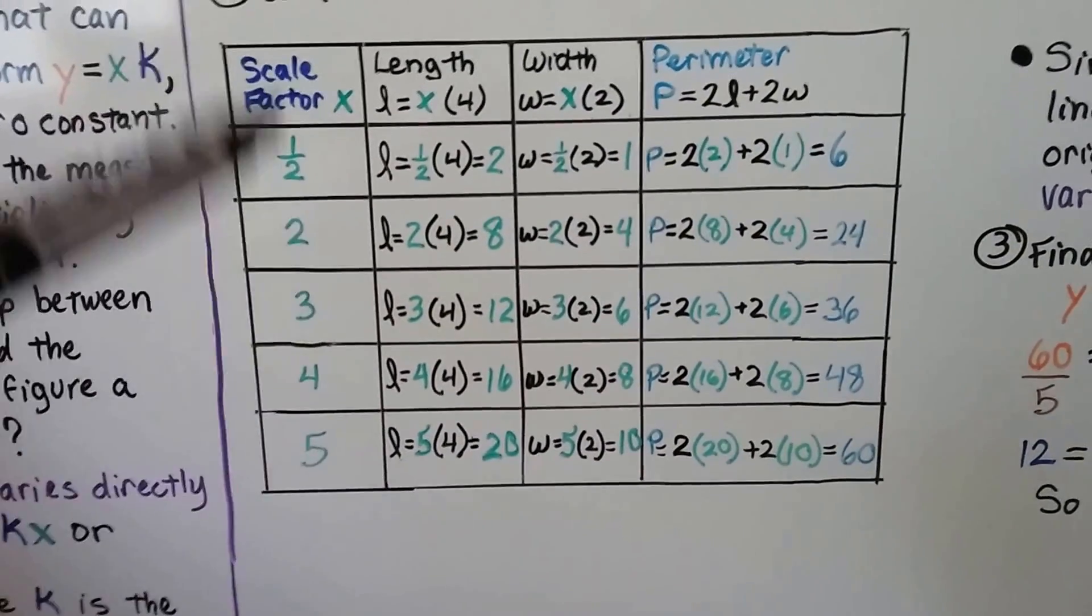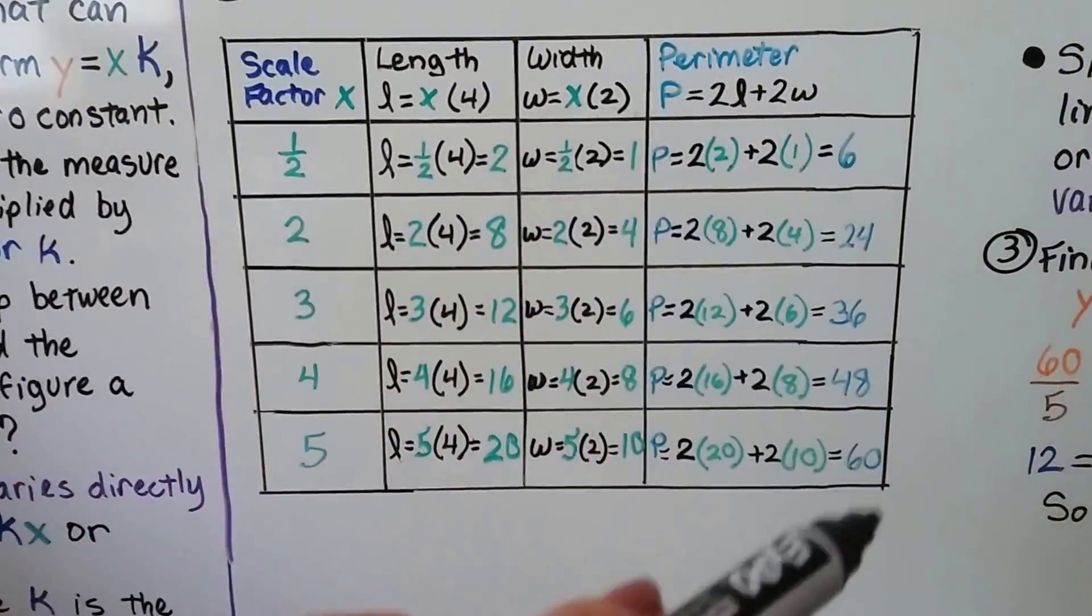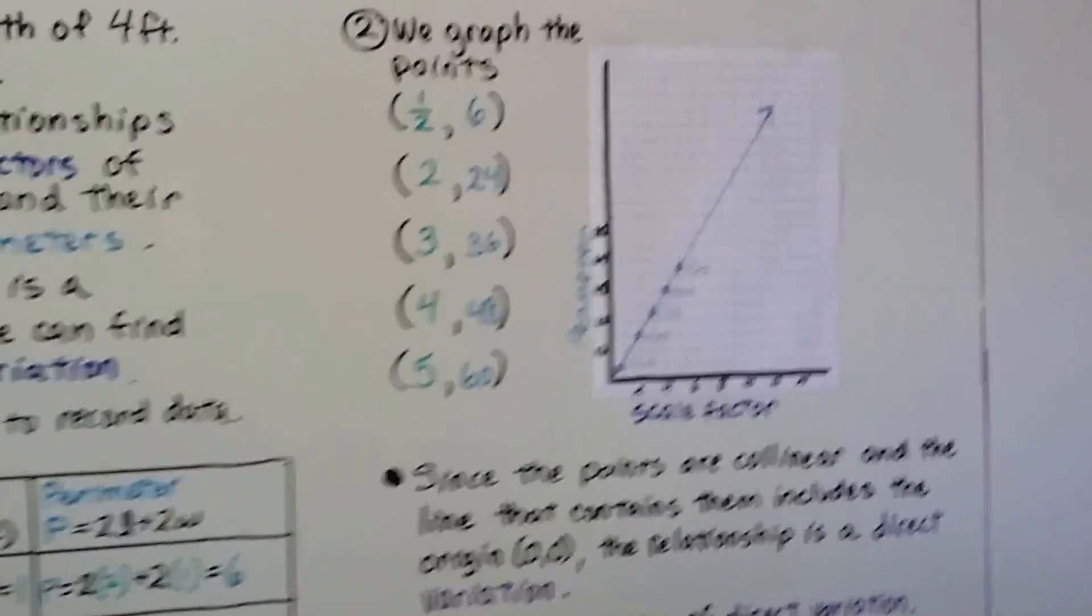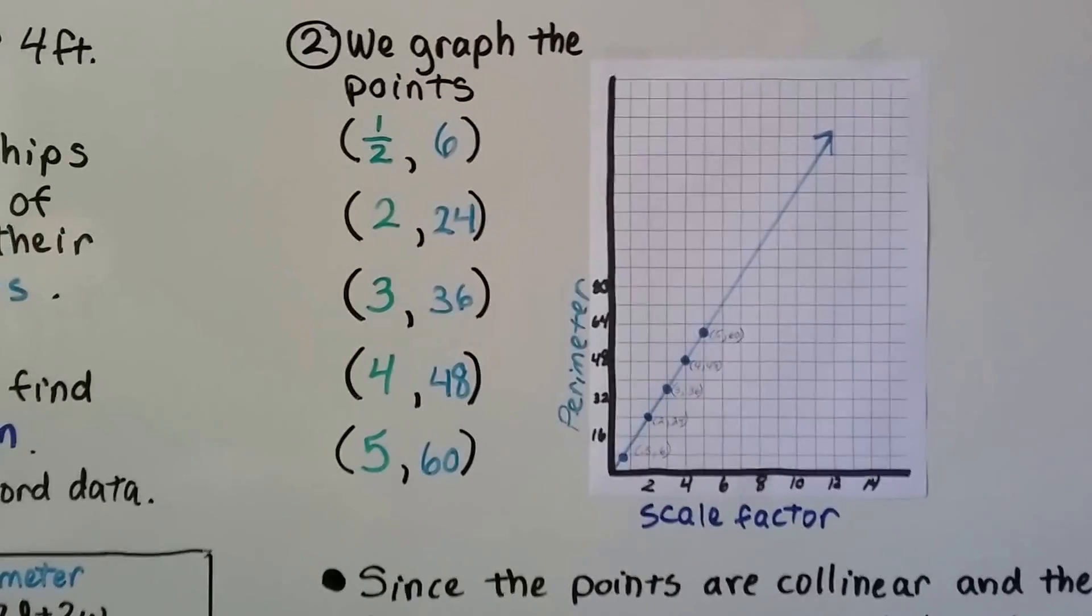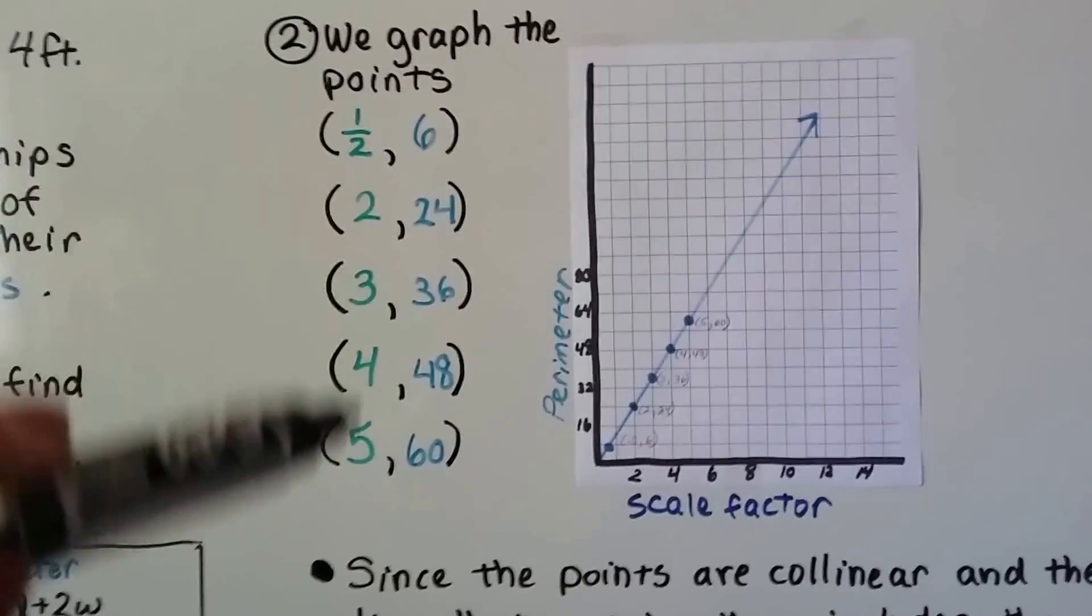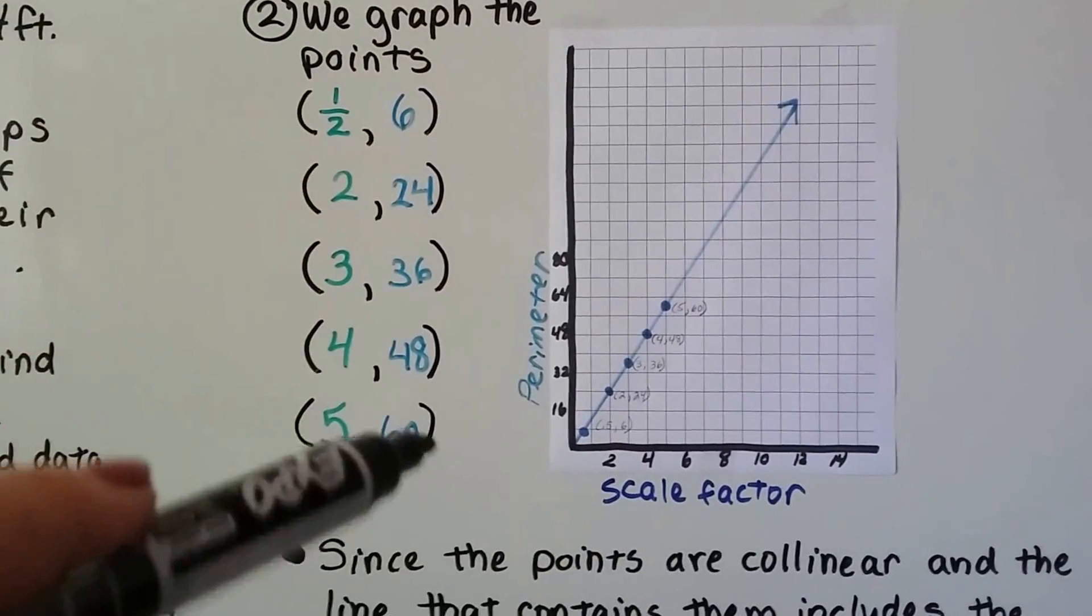So these are going to be our x values, and these are going to be our y values when we graph them as points as ordered pairs. So here's those x values, and here's those perimeter y values.